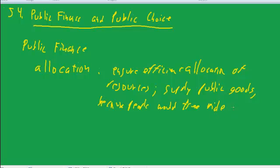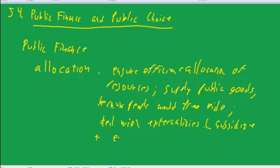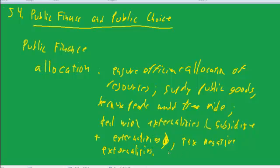So that's why the government needs to supply public goods. And then the government has to deal with externalities — it has to subsidize positive externalities, which we talked about a couple of lectures ago, and it has to tax negative externalities. Taxing negative externalities is often called a Pigouvian tax, because of an economist named Pigou who proposed that idea.